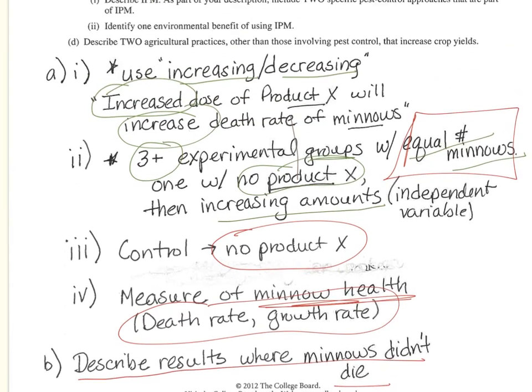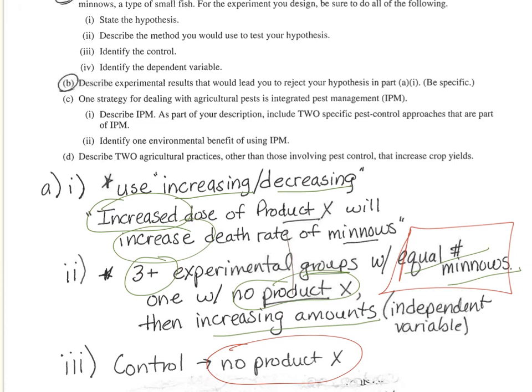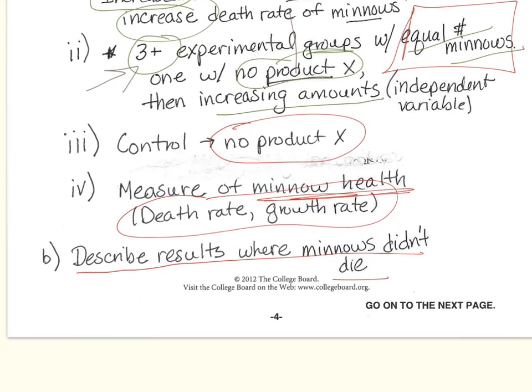You'll notice the question asks you to be specific, giving you indicators that you need precise language and specific words. So if you see this on a future FRQ, remember to use words like 'increasing' and 'decreasing,' that you need three or more experimental groups or ponds or plants or whatever they're asking about, that you know what your control is, and make sure you also review independent and dependent variables.